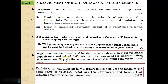Explain the arrangement used to minimize errors in each case. Question No. 5: Explain with a neat diagram how a sphere gap can be used to measure the peak value of voltages. What are the parameters and factors that influence such voltage measurements? Questions 3, 4, and 5 should not be avoided by the student.